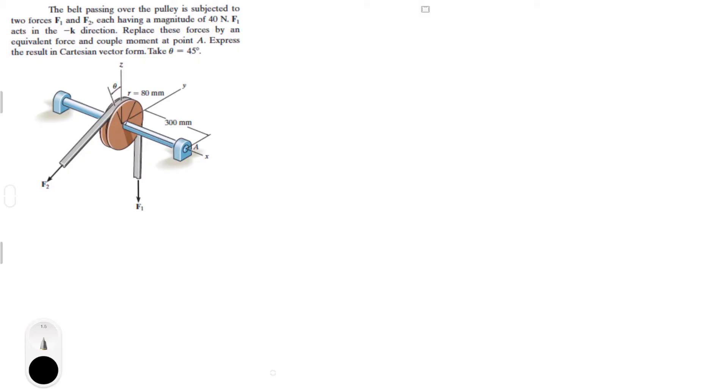Alright guys, now we're going to do this problem that says the belt passing over the pulley is subjected to two forces, F1 and F2, each having a magnitude of 40 N. F1 is going straight down in the negative K direction. Replace the forces by an equivalent resultant force and couple moment at point A. Express the result in Cartesian vector form with theta equal to 45 degrees. This problem can be a little bit intimidating but it's really not all that hard.